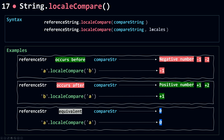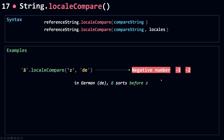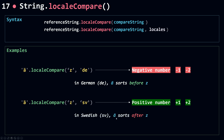The second parameter is locales. By default, if you don't pass in locales, it will use your browser's default language — for me that's English United States. For example, I have here 'Ä' with an umlaut mark and I'm comparing it with 'Z'. In German, Ä sorts before Z, so I get a negative number. But in Swedish I get a positive number because in Swedish Ä sorts after Z. That's an example of how changing the locales changes the returned value from localeCompare.